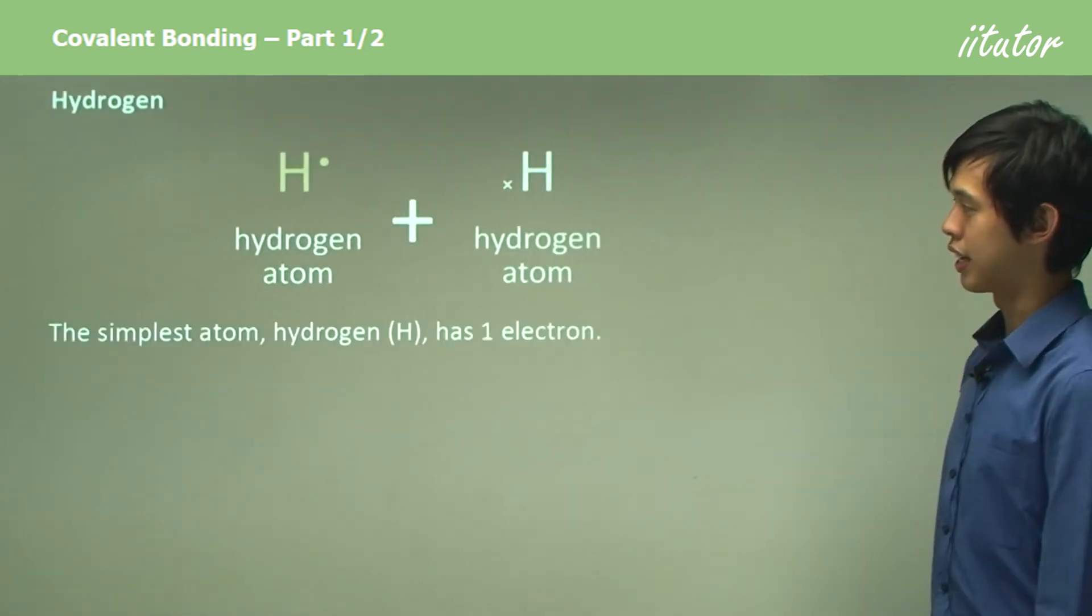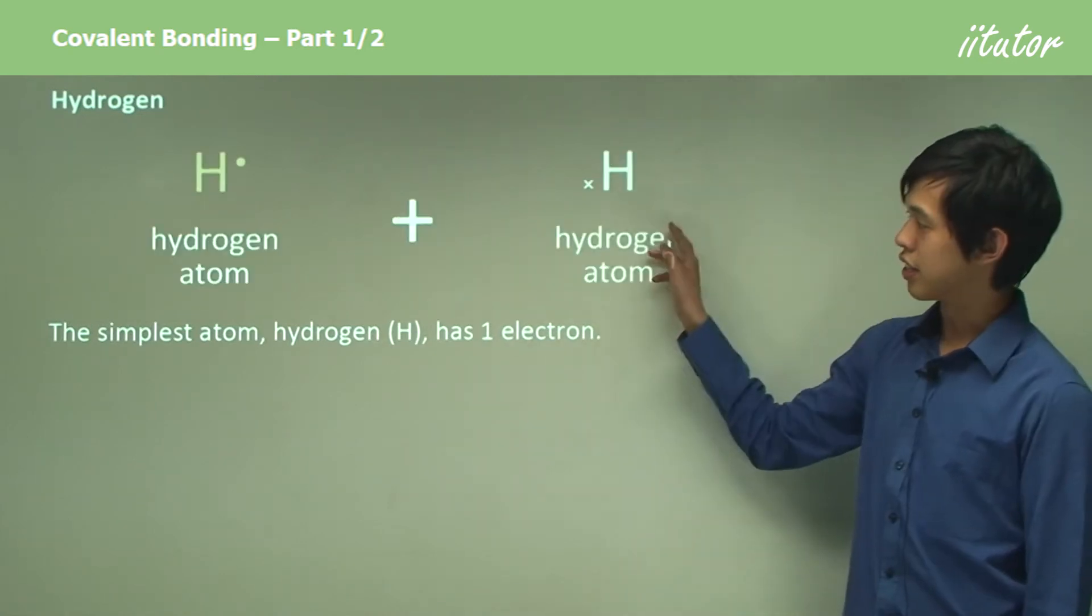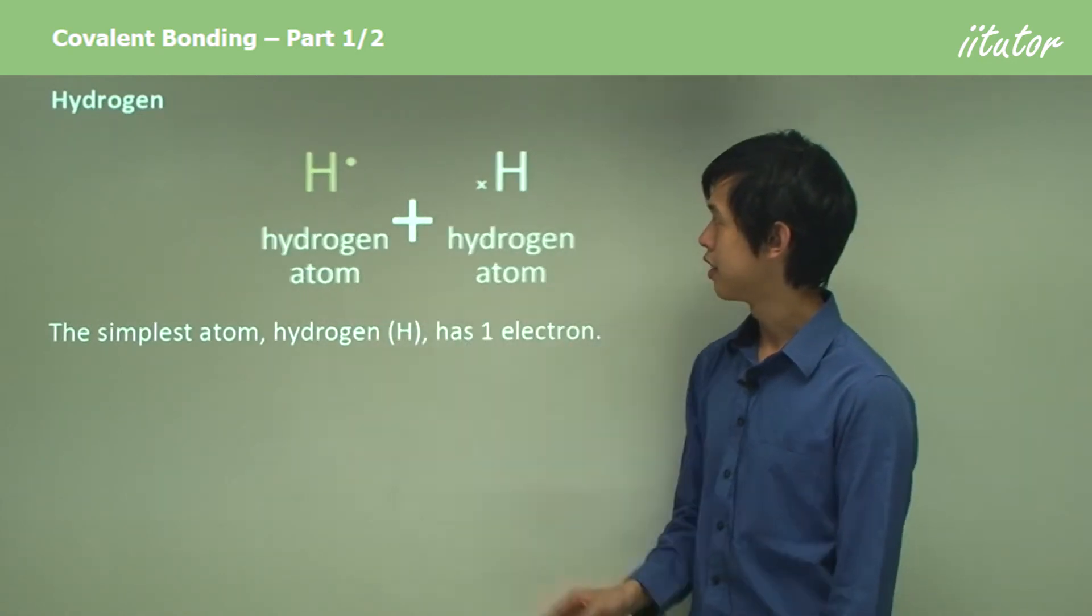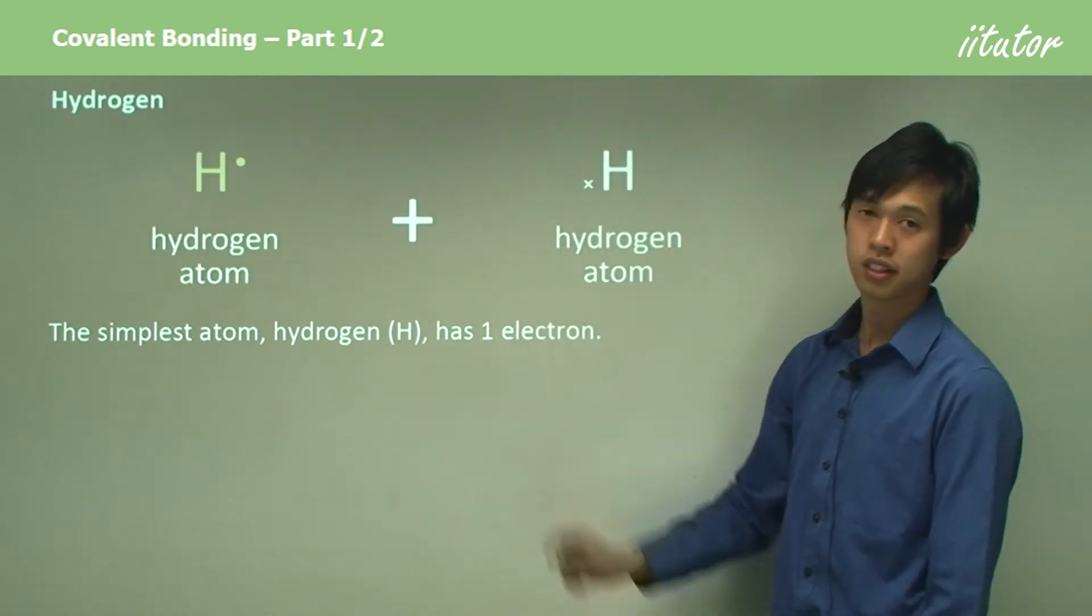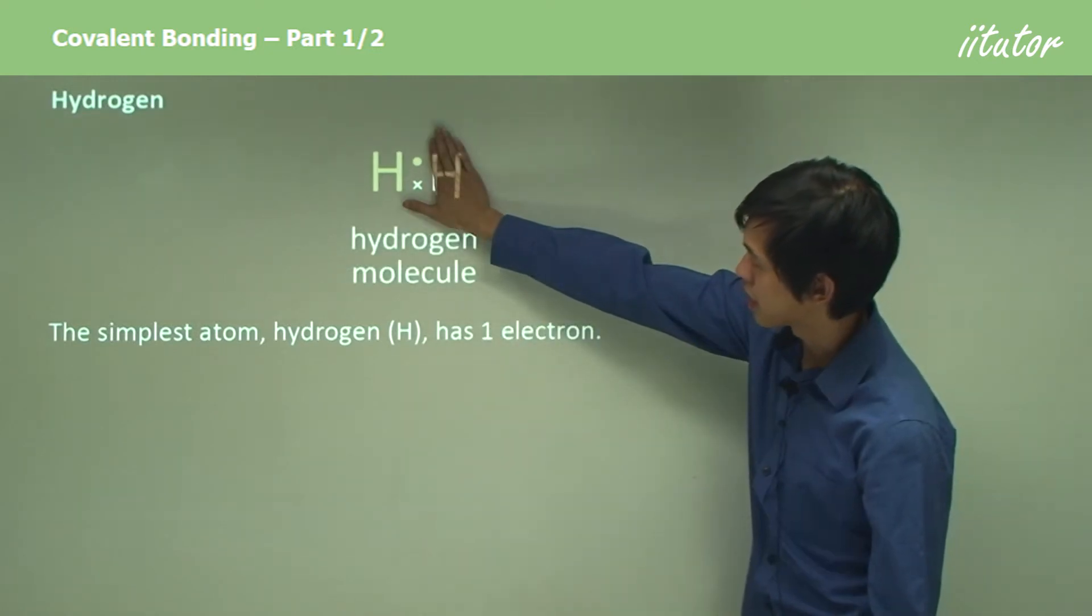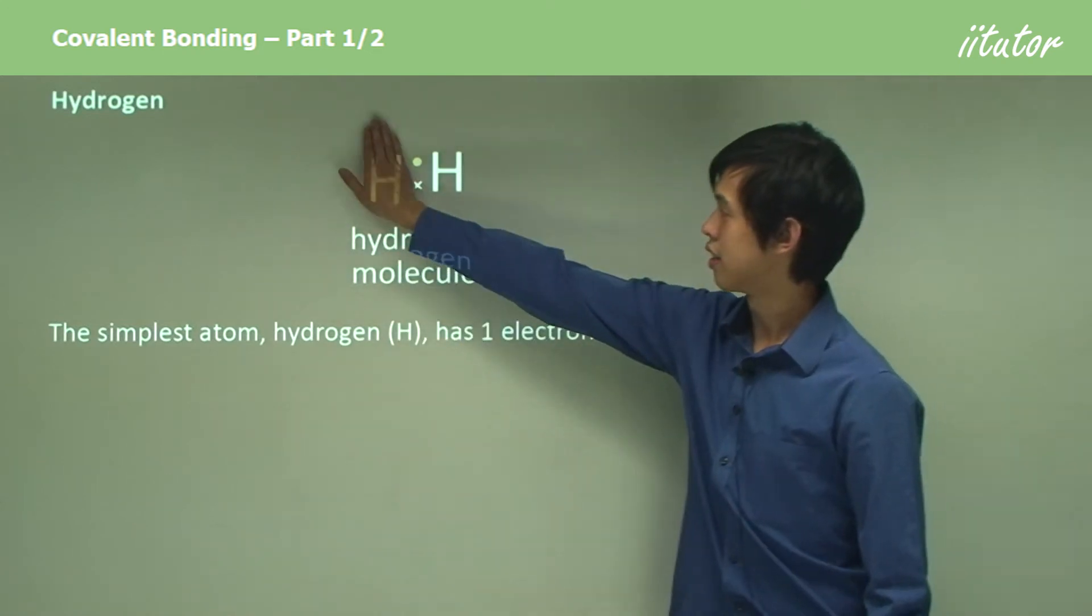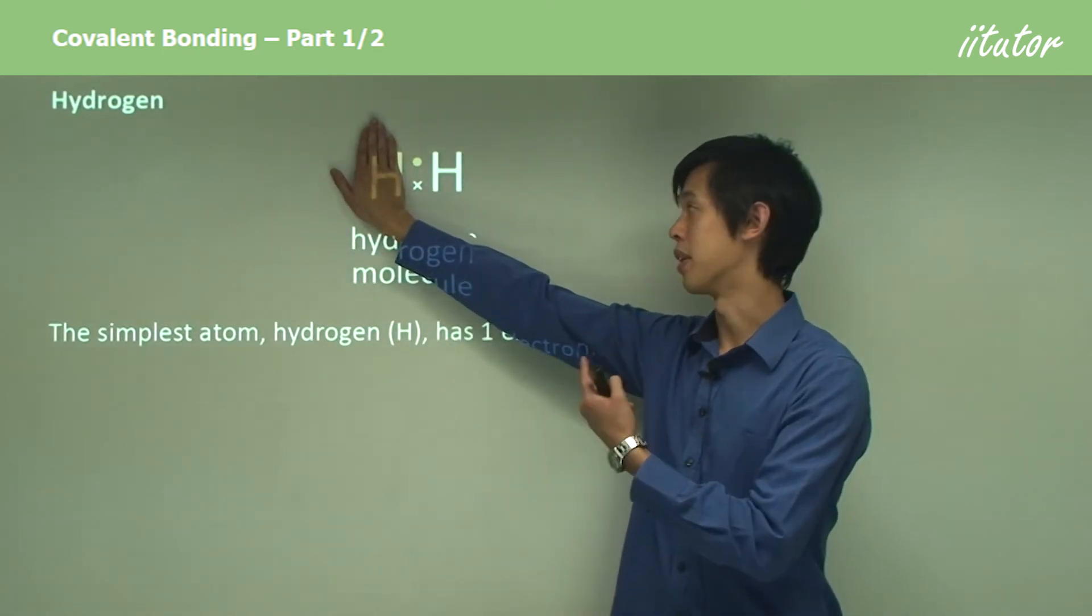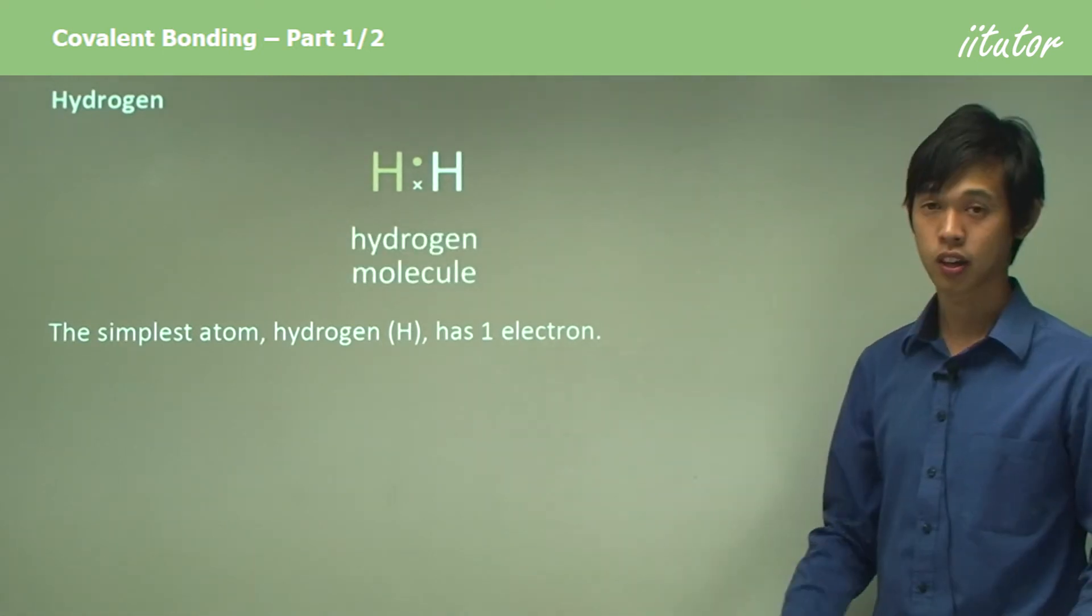Here's how we do it. The simplest atom, let's take hydrogen, has one electron. You can see two hydrogen atoms come together and then they share these two electrons, and now they become the hydrogen molecule. As they come together, if I cross this one out, you can see it has two electrons. If I did that to the other side, this side, the white H has two electrons as well. They're both stable now. That's why covalent bonding works.